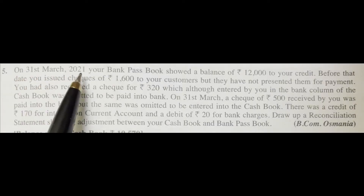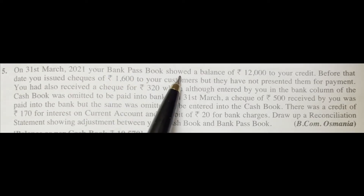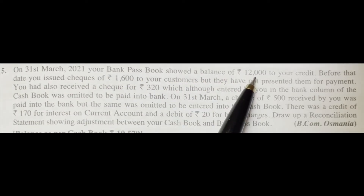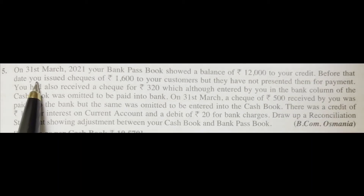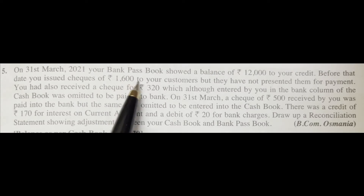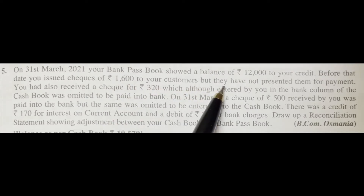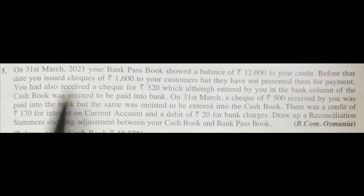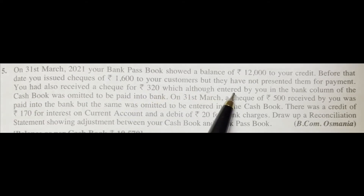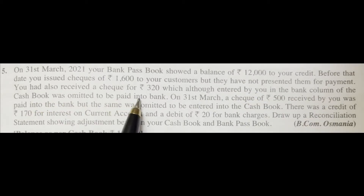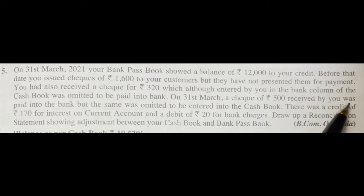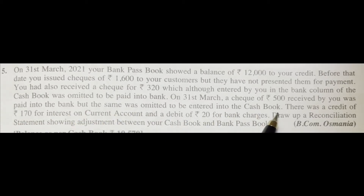On 31st March 2021, your bank passbook showed a balance of 12,000 rupees to your credit. Before that date, you issued cheques of 1,600 rupees to your customers but they have not presented them for payment. You had also received a cheque for 320 rupees which, although entered by you in the bank column of the cashbook, was omitted to be paid into bank. On 31st March, a cheque of 500 received by you was paid into the bank but the same was omitted to be entered into the cashbook.